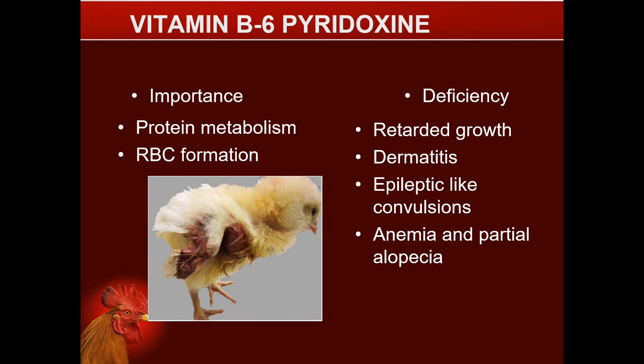For Vitamin B6, or pyridoxine, the importance includes protein metabolism and red blood cell formation. Deficiencies result in retarded growth, dermatitis, epileptic-like convulsions, anemia, and partial alopecia.